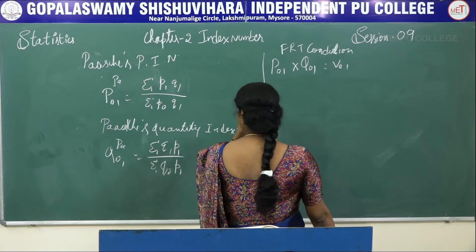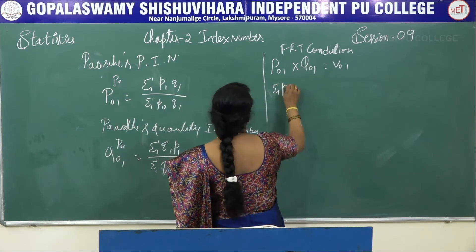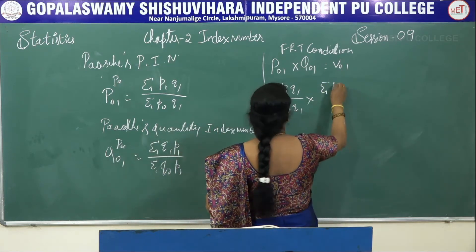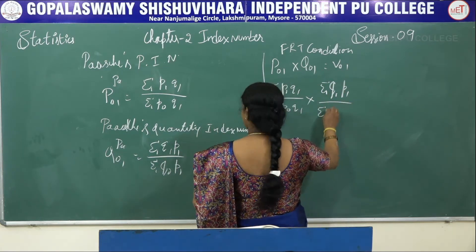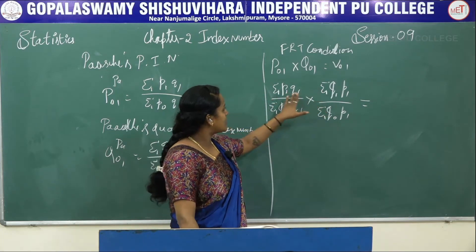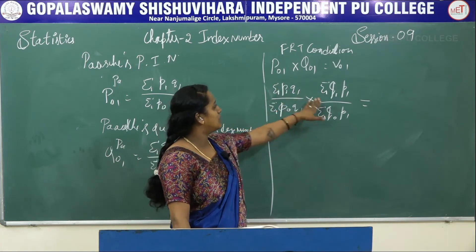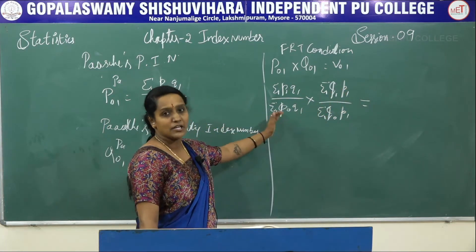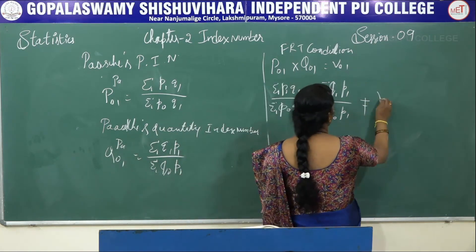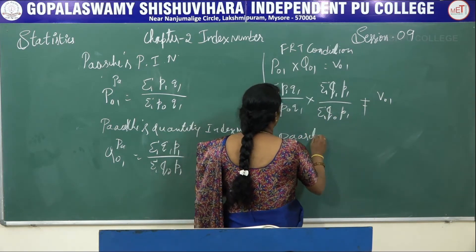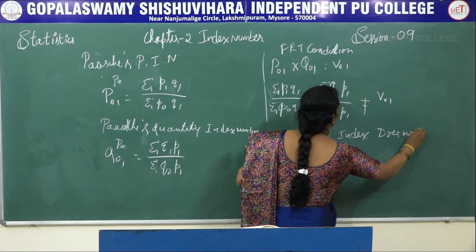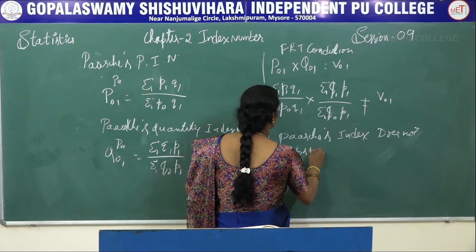Substituting into the FRT condition: (summation P1×Q1 / summation P0×Q1) × (summation Q1×P1 / summation Q0×P1) should equal V01. In the numerator we have P1×Q1 and Q1×P1, which is fine. But in the denominator we need P0×Q0, whereas here we have Q1 and P1. So this is not equal to V01, and therefore Paasche's index does not satisfy FRT.